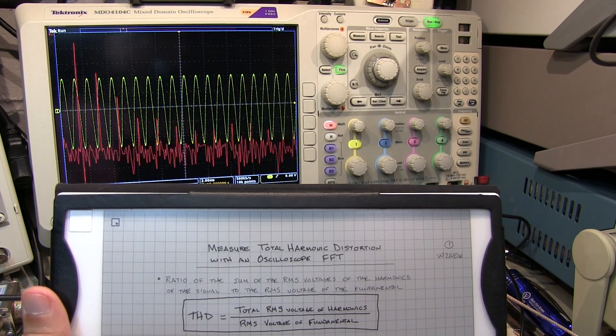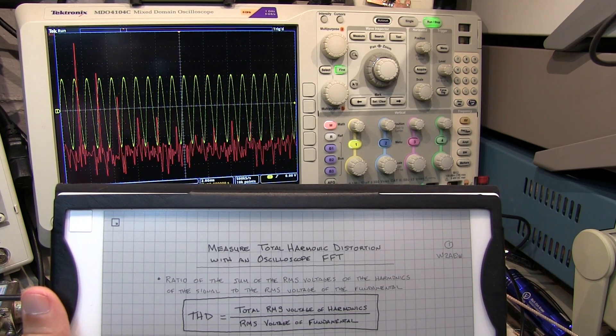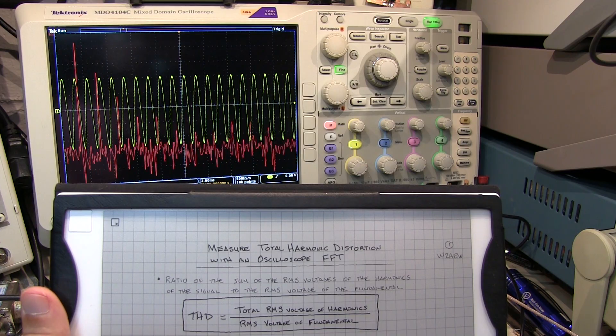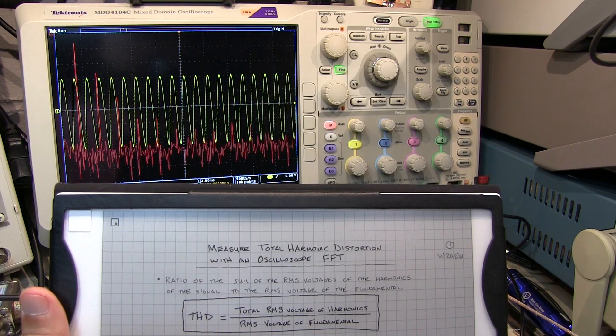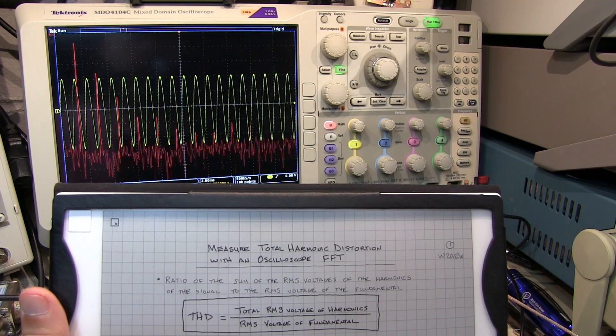One of my YouTube viewers recently asked if it was possible to use the FFT function on an oscilloscope to measure the total harmonic distortion on a signal. And of course this is possible, so in today's video we're going to take a look at that.